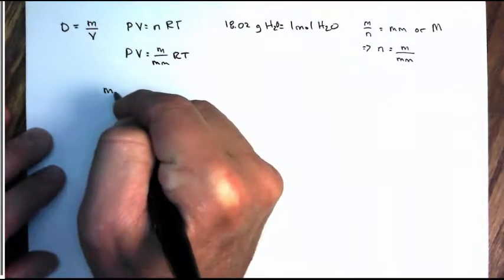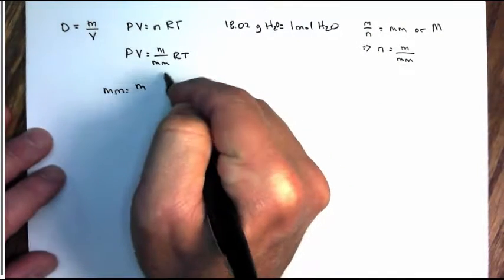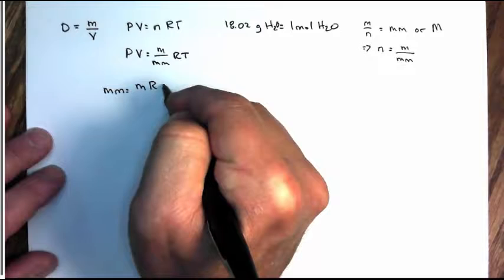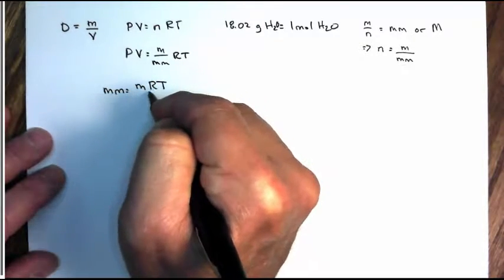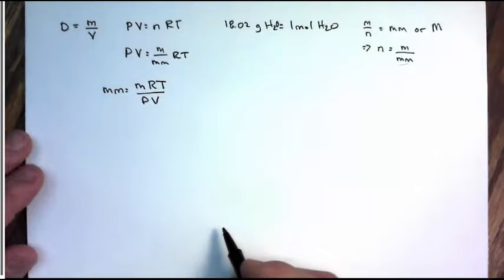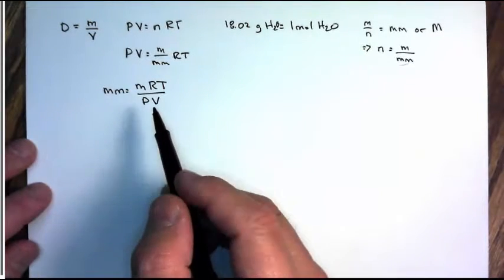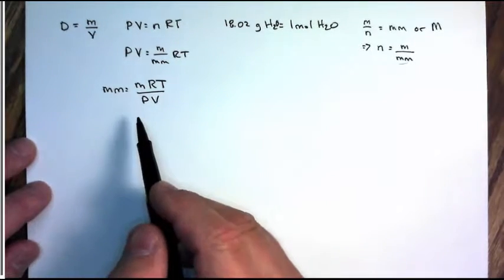I can rearrange this, and I find that molar mass equals mass times the ideal gas constant times temperature over pressure times volume. So if I wanted to find the molar mass of some gas, and I had all these values, I could find the molar mass.